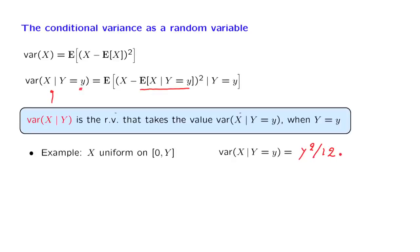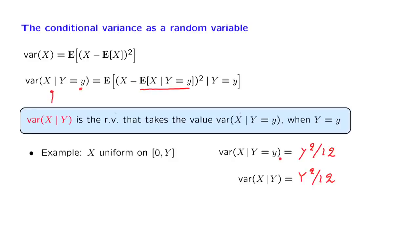Let us now change this equality between numbers into an abstract equality between random variables. The random variable — variance of X given Y — is a random variable that takes this value whenever capital Y is little y, which is the same as saying it equals Y squared over 12. This is a random variable that takes that value whenever capital Y happens to be equal to little y.